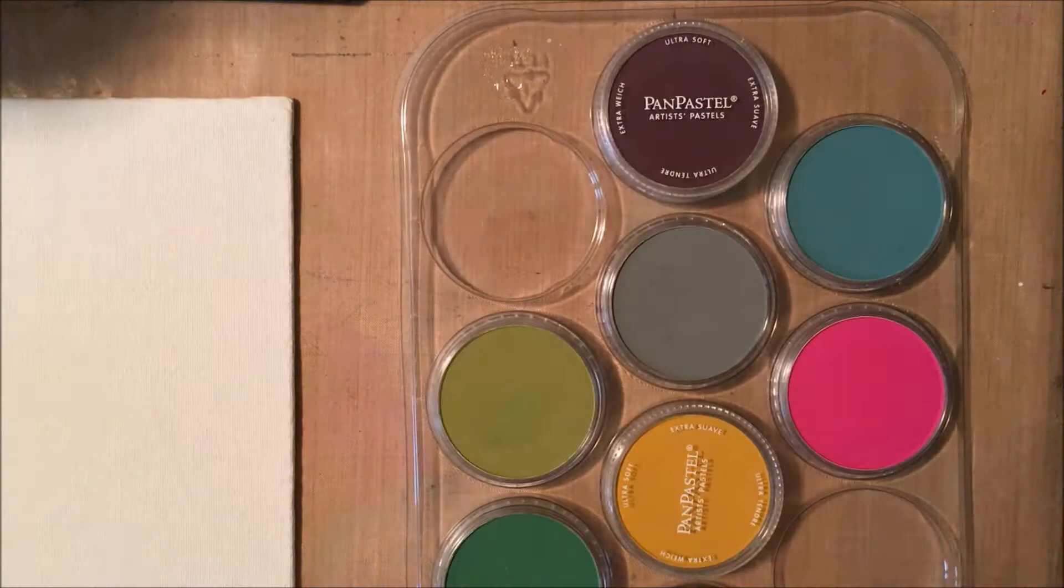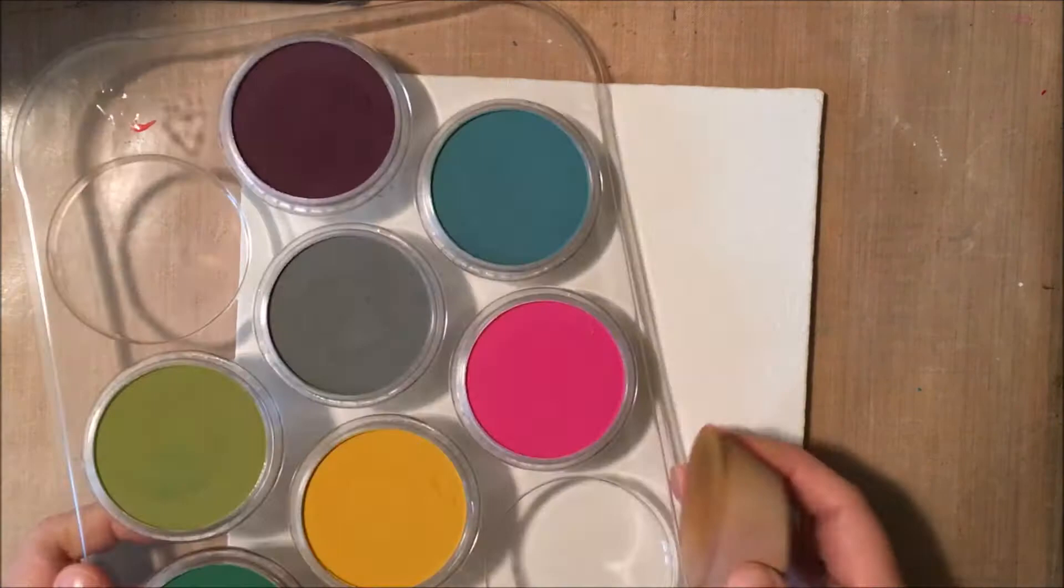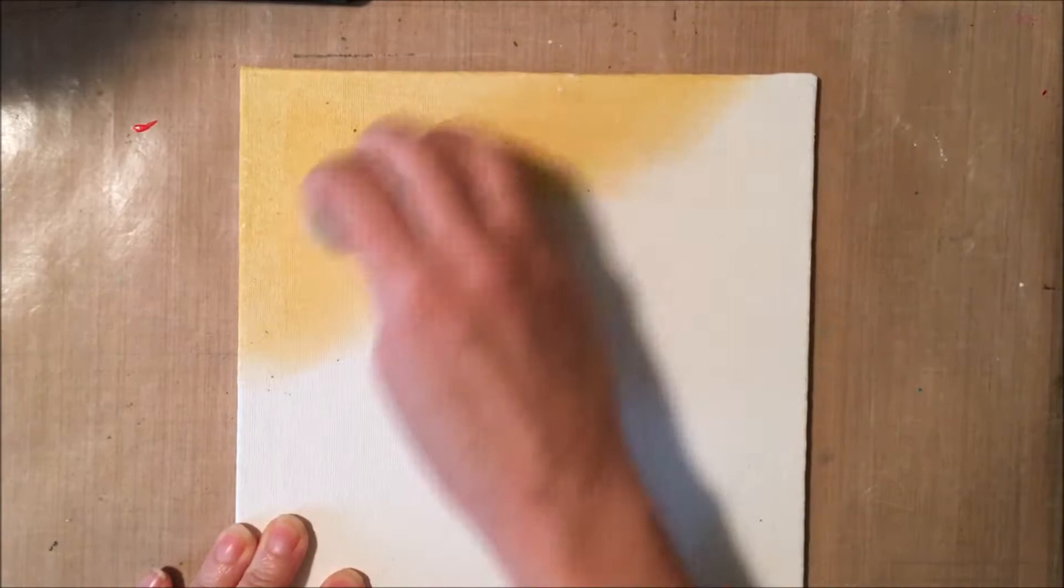I also have some pan pastels, this beautiful butterfly stencil from the Crafters Workshop, and embossing ink. Mine is from Simon Says Stamp but you could use the Versamark as well. And then I have some tools and all I'm doing is picking up a little bit of the pan pastel and applying it onto my canvas.